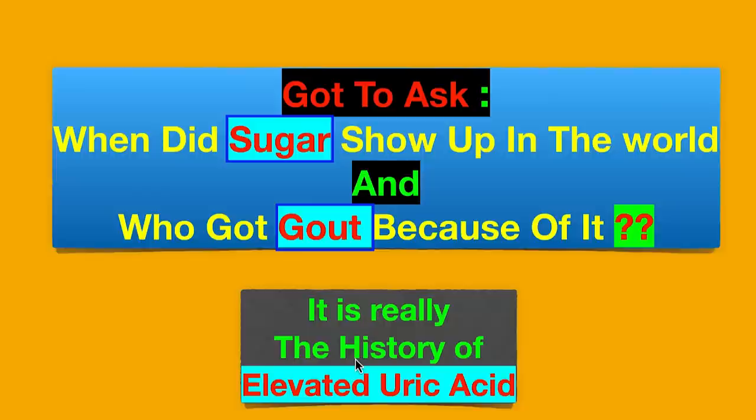That conventional explanation confused me because it had nothing to do with my situation. I don't do fructose; I don't do much in the way of high purines. What's my issue? So let's look a little more deeply. When did sugar show up in the world and who got gout because of it? This is really a history of elevated uric acid.